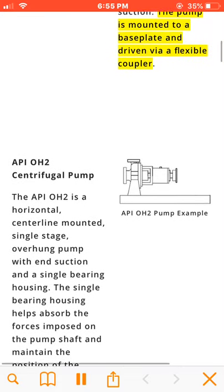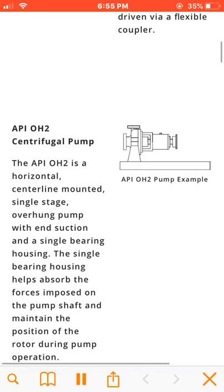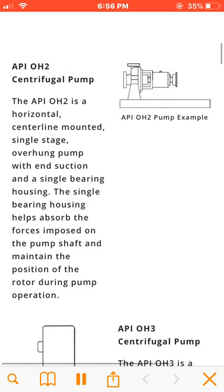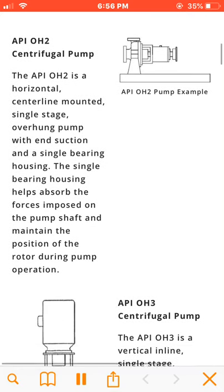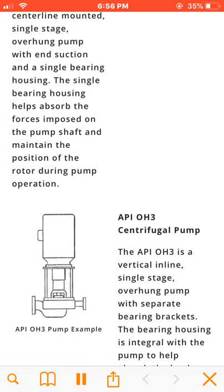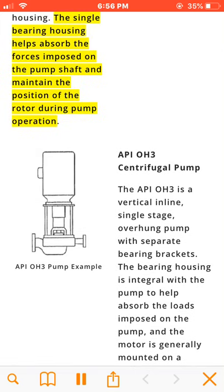The API OH2 is a horizontal, centerline-mounted, single-stage, overhung pump with end suction and a single bearing housing. The single bearing housing helps absorb the forces imposed on the pump shaft and maintain the position of the rotor during pump operation.